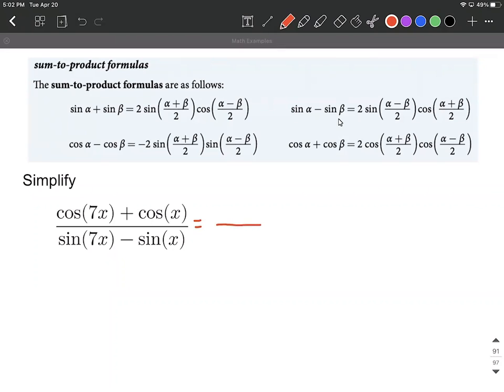So identifying everything, I'm going to visualize this as being my alpha and this as being my beta as I plug into our cosine plus cosine formula.